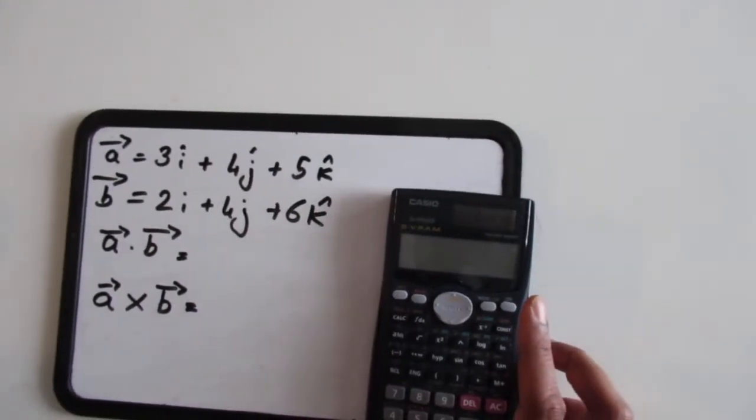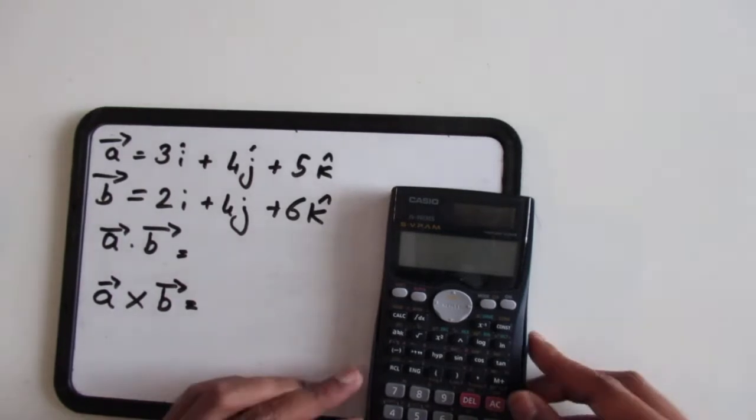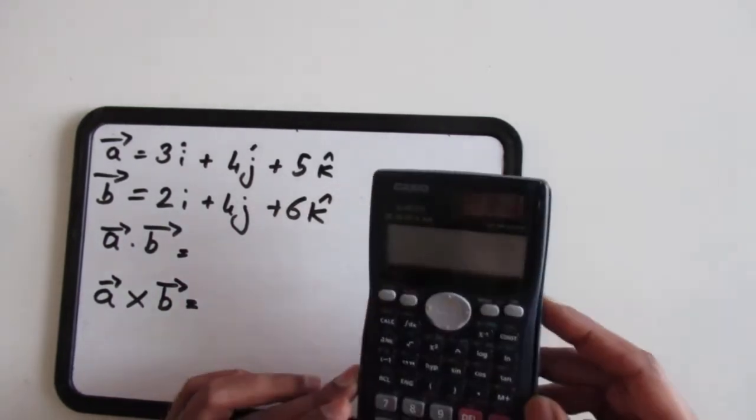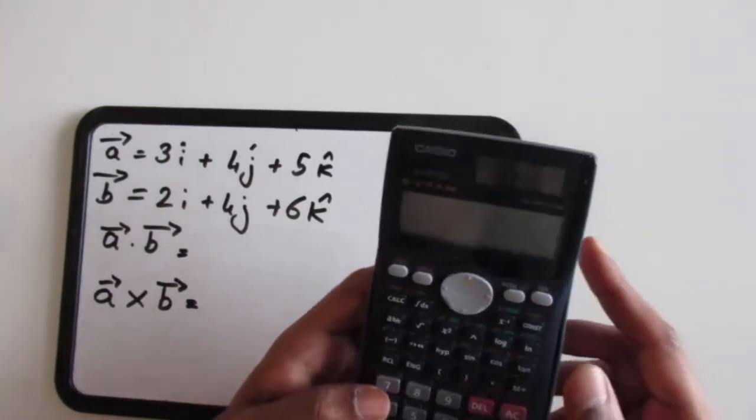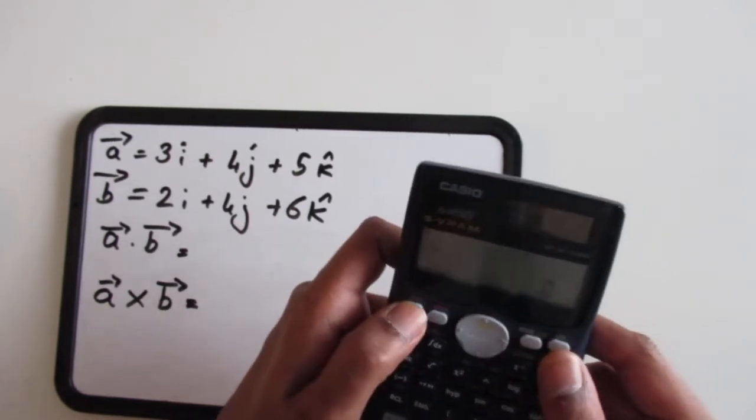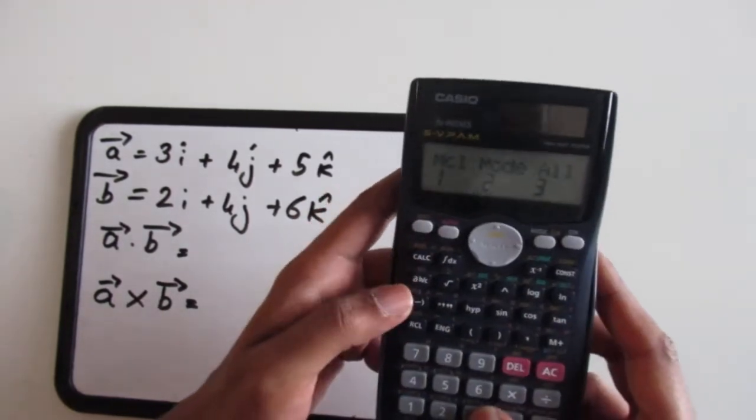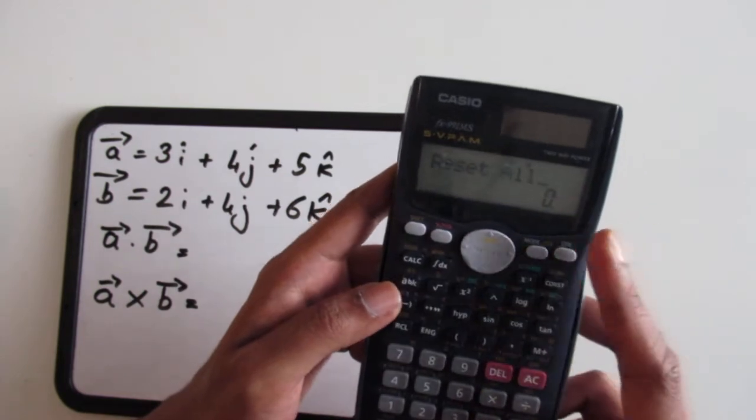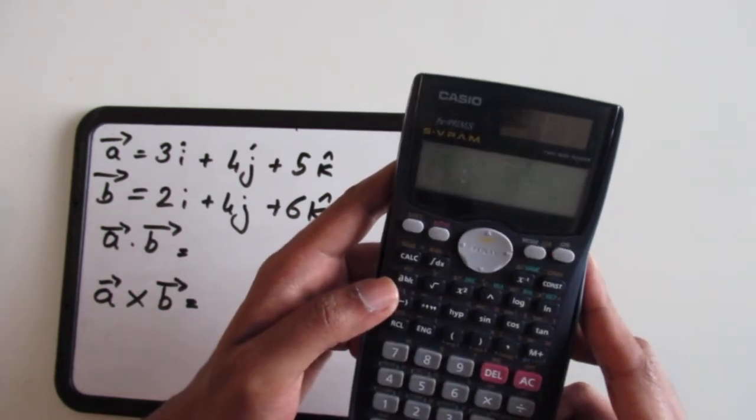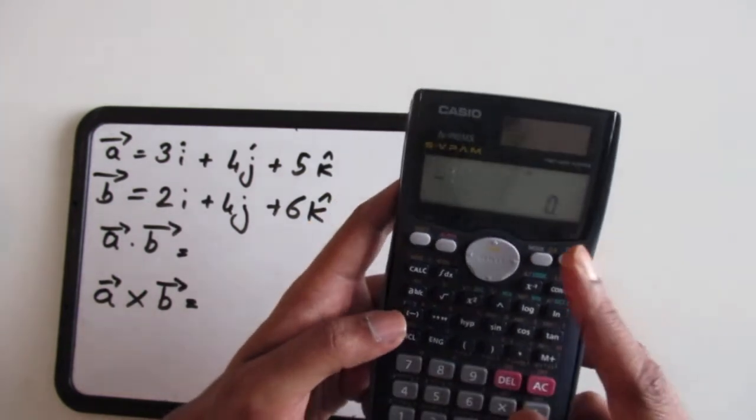Hey guys, so today we're going to do some vector operations with the Casio FX991 calculator. As usual, I'm going to delete all the saved data by pressing mode, shift, mode, clear all.